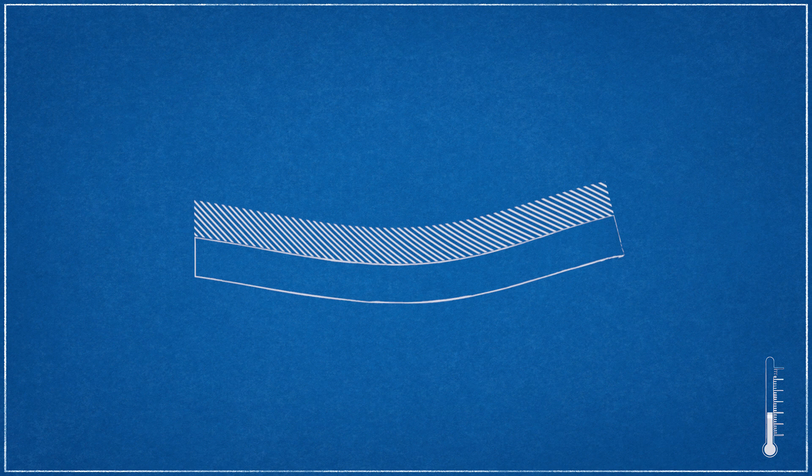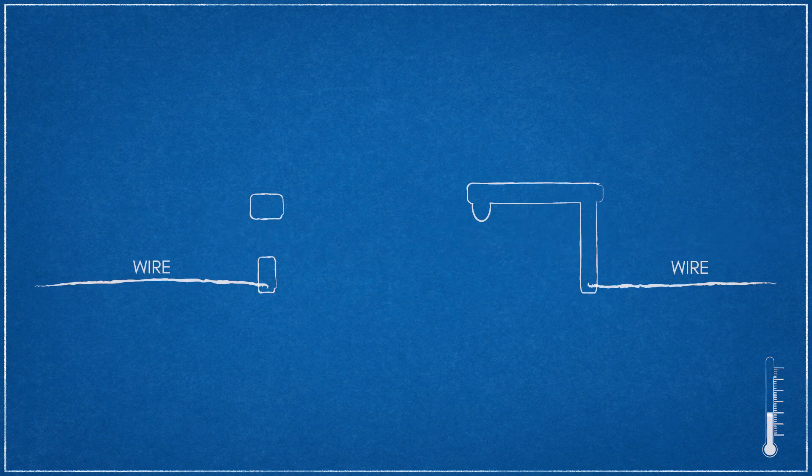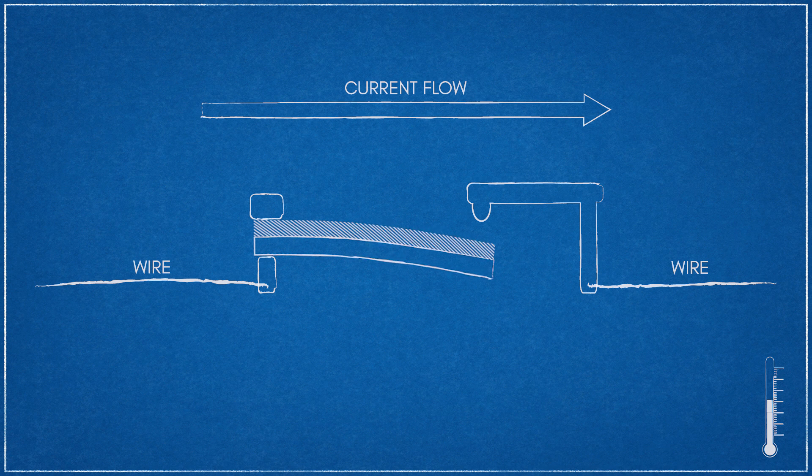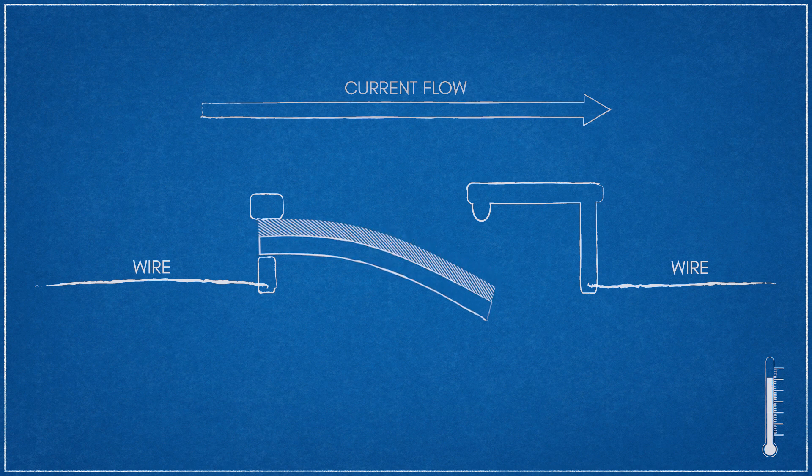Because metals are excellent electrical conductors, bimetallic strips can be used to control electricity. If we configure a bimetallic strip in a manner that allows the thermal motion at a specific temperature to break or complete the contact points of an electrical switch, we now have a temperature-driven switch. This forms a simple, yet reliable electrical thermostat.